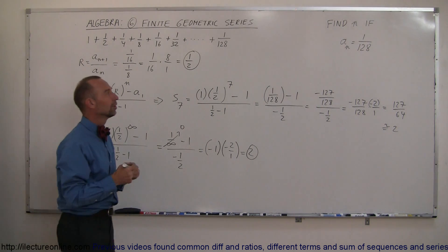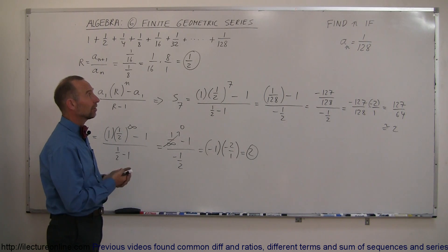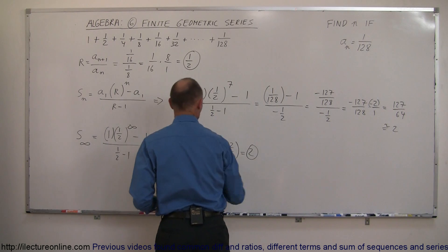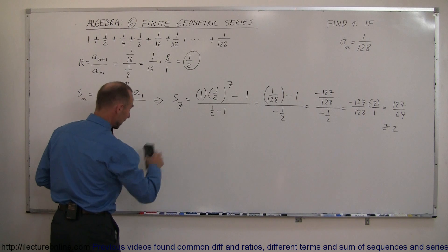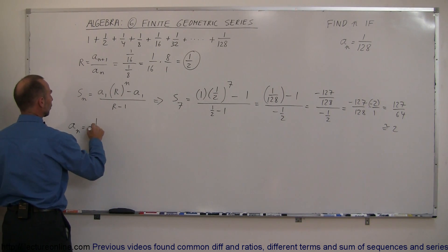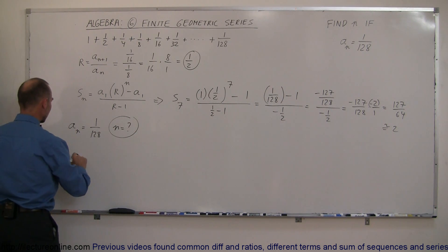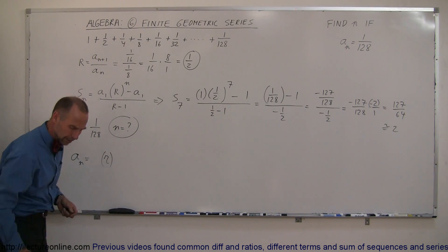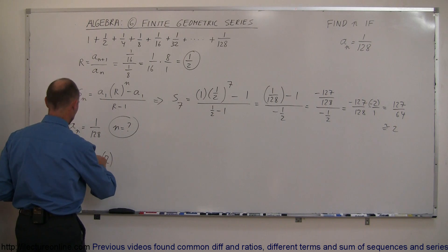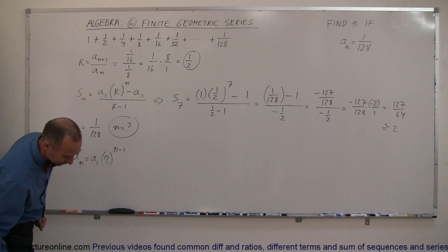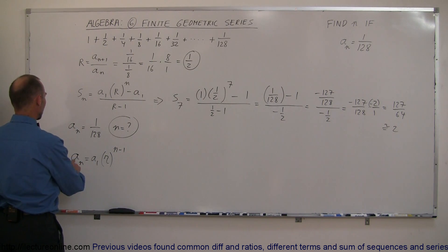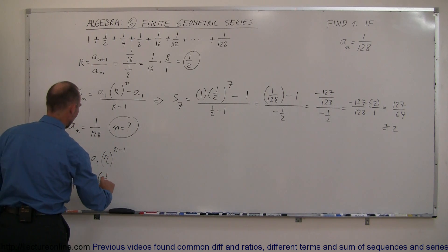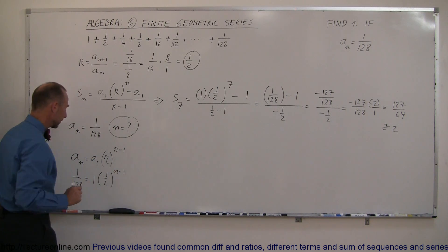There's one more thing to show: finding which term number n gives a sub n equal to 1/128. The formula for the n-th term of a geometric series is: a sub n equals the first term times the common ratio raised to the (n minus 1) power. So 1/128 equals 1 times (1/2) raised to the (n minus 1) power, which simplifies to 1/128 equals (1/2)^(n−1).